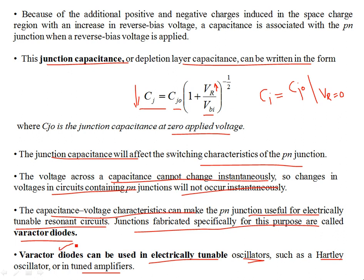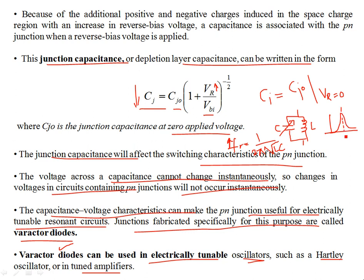A varactor diode has a variable capacitor. If you have a parallel LC combination where the capacitor is variable, the resonance frequency of such a circuit is given by fR = 1 / (2π√LC). If the capacitor is tunable, then you have a tunable resonant frequency and you can select the Q of the circuit, which has to do with selectivity — how sharp the characteristics are at the resonance frequency, and the 3 dB bandwidth. The resonance frequency fR is adjustable and you can set it to any desired radio station if it's a radio receiver.